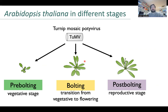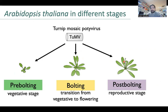With these two strains, we have inoculated Arabidopsis plants in three developmental stages: from young plants in pre-bolting to older plants in post-bolting, and an intermediate stage that is bolting.